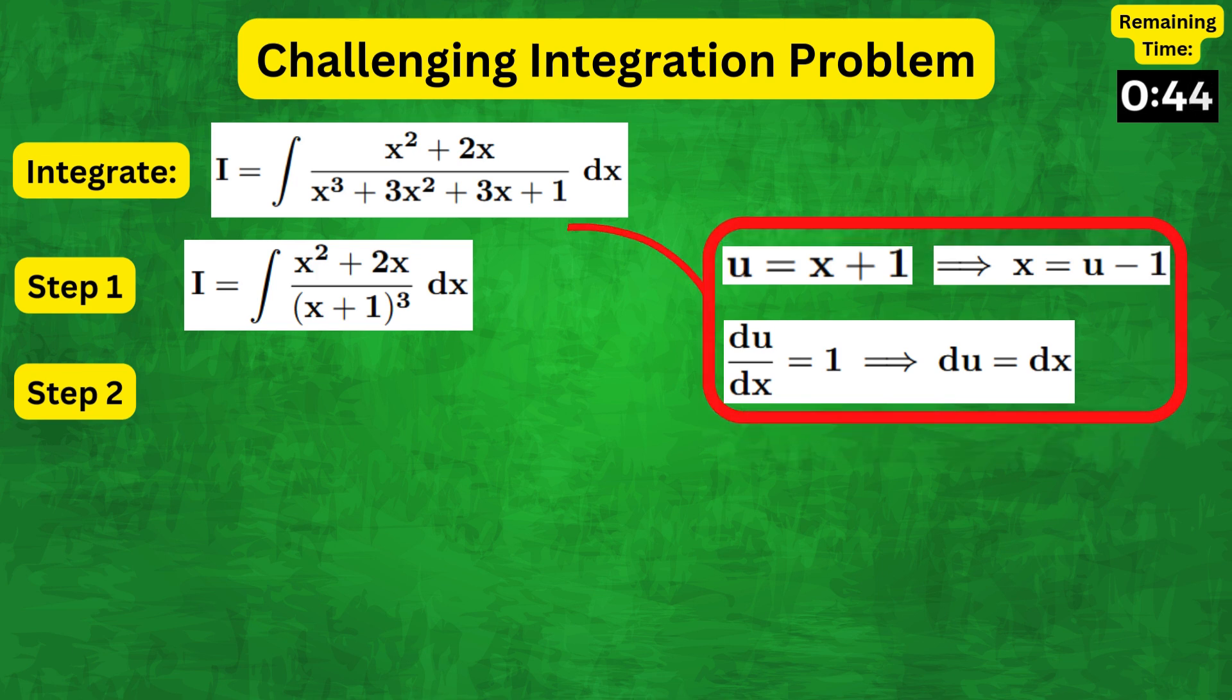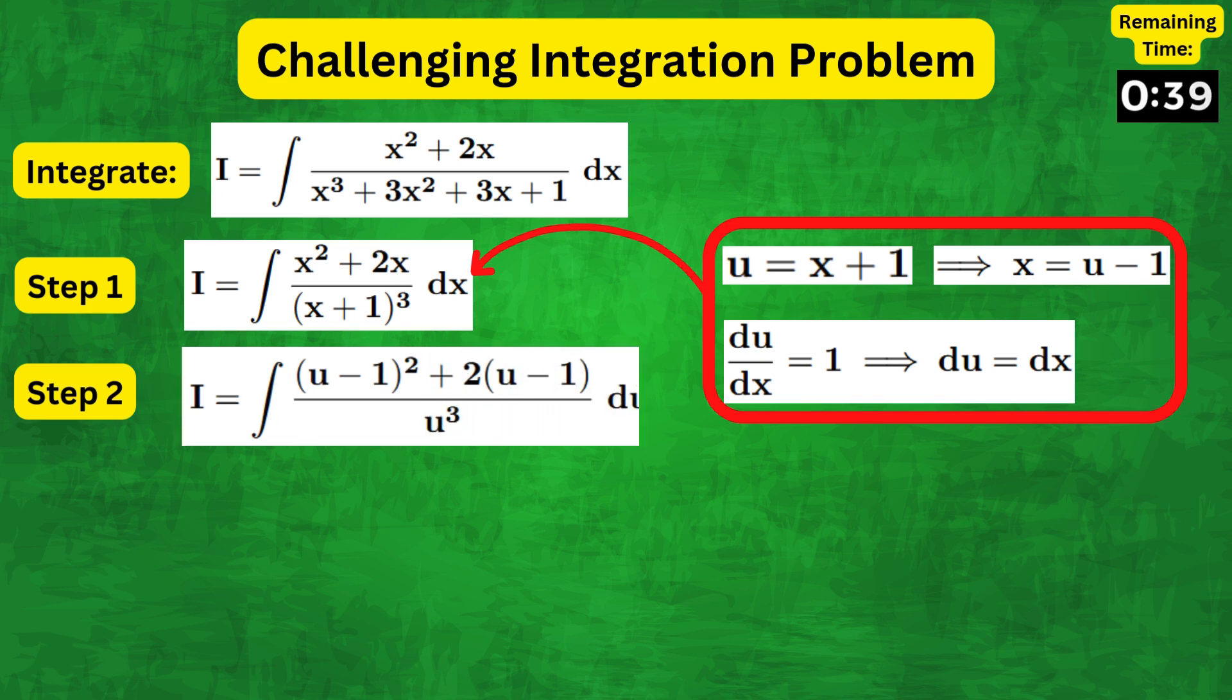Therefore, plugging these in, the integral becomes u minus 1 whole squared plus 2u minus 1 over u cubed du.